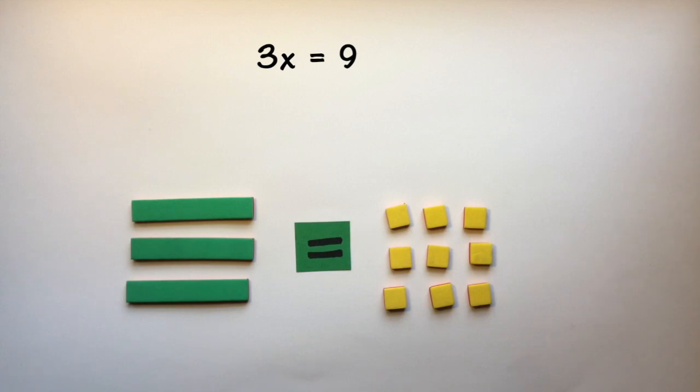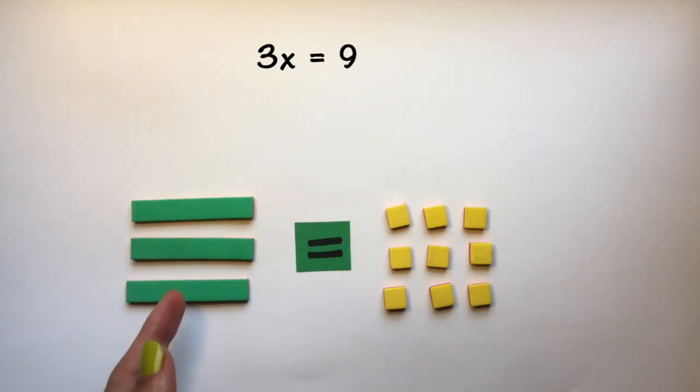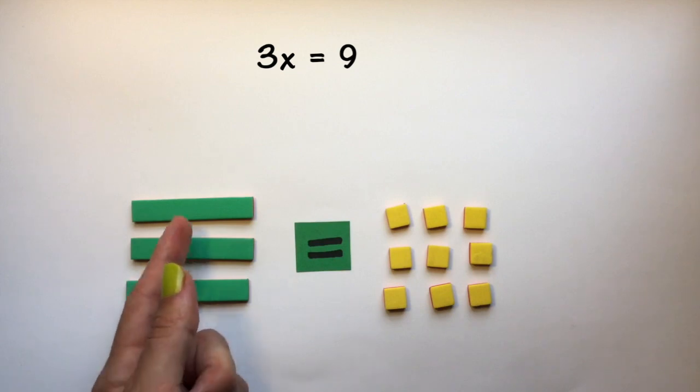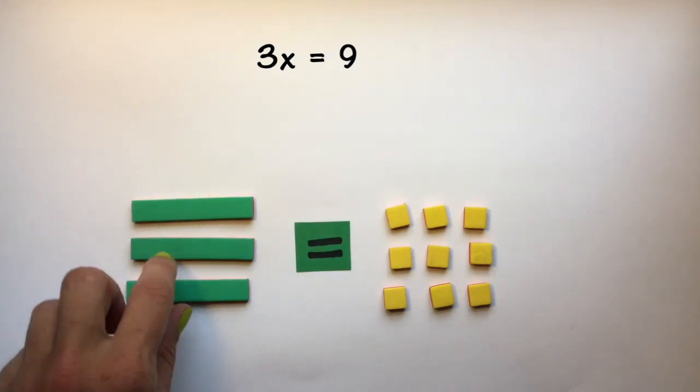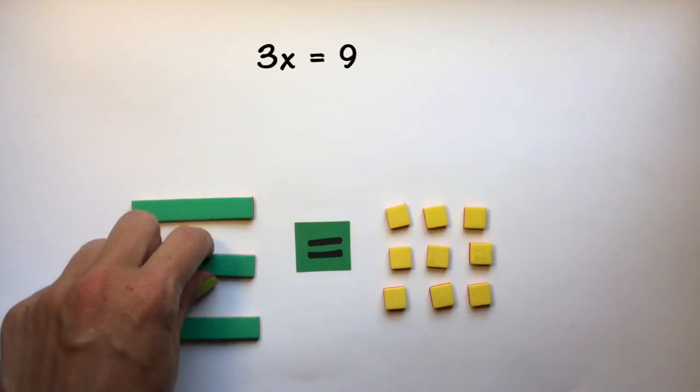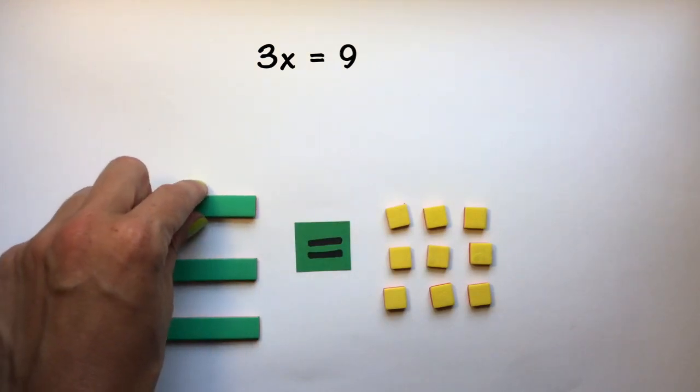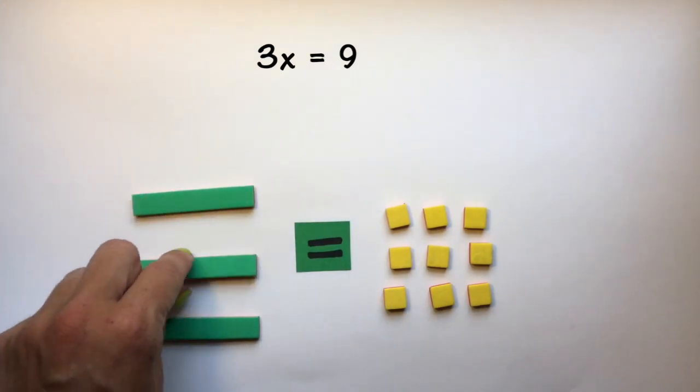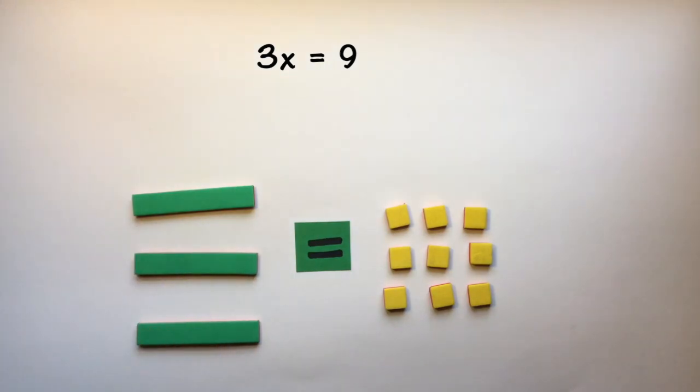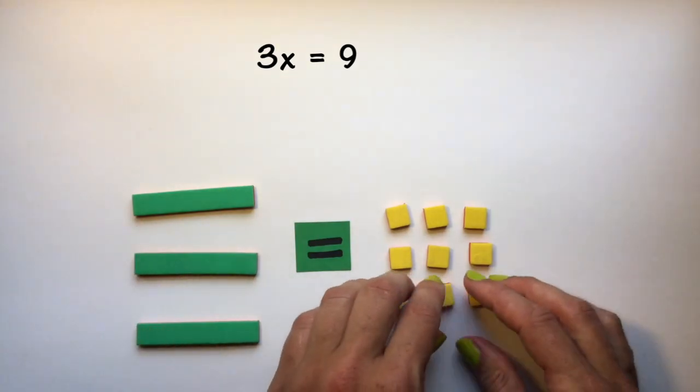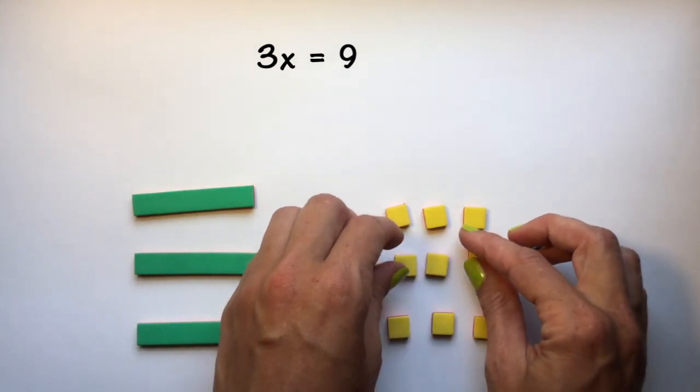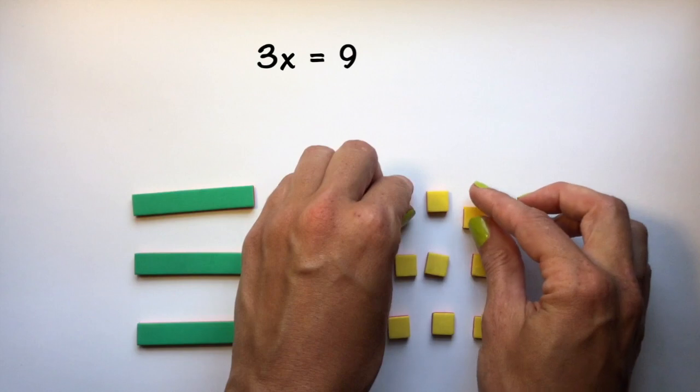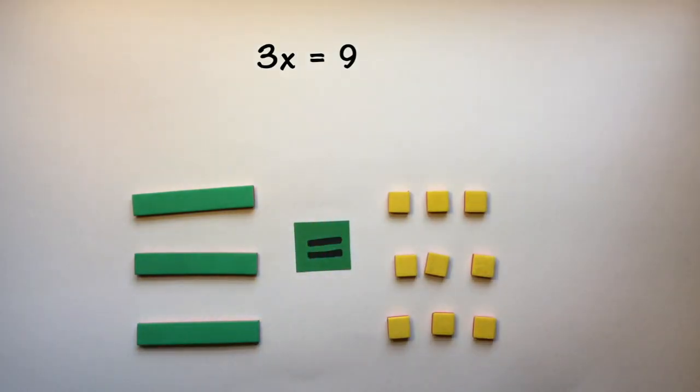Now, in order to get x by itself, I'm going to have to split what I have here into three equal groups. So I can easily do that with 3x, splitting them up into groups of just 1x. And here I can split these up into three groups as well.